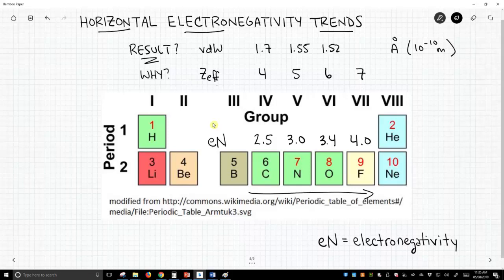Fluorine is smaller still. So we see this contraction in atomic radius as we move across the periodic table.